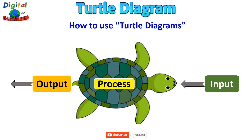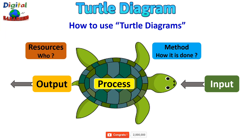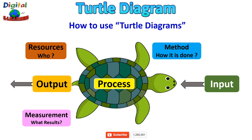The process may involve many employees and multiple departments within your organization. Next is the method — or how it is done. Then we have the resources: who is actually going to work on this, including skills, competency, and training requirements. Then we have the measurement — what results we have — which could be in the form of performance indicators such as objectives, targets, and key performance indicators. We also have resources in terms of what equipment and materials you need, including machines, materials, test equipment, systems, software, and hardware.